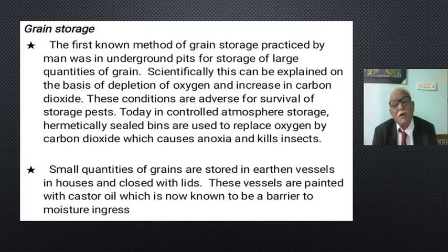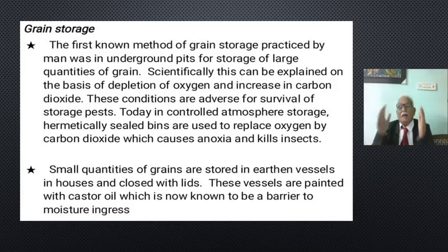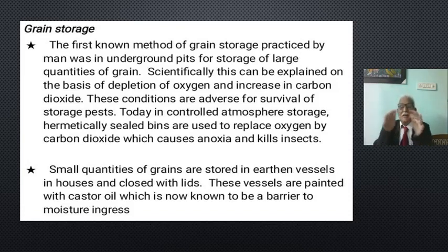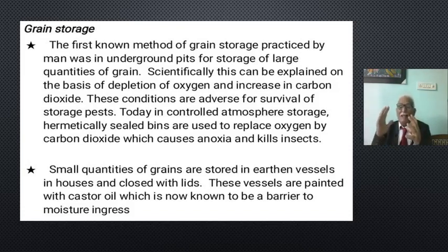Small quantities of grains — 50 kg, 100 kg, 150 kg, 200 kg — were stored in earthen vessels in houses, closed with lids. Before storing, the vessels were painted with castor oil, which is now known to be a barrier to moisture ingress. This coating acted as a barrier preventing moisture from entering and spoiling the grain.